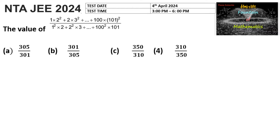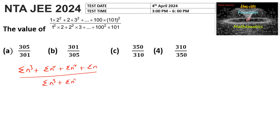Further simplifying, we get summation n³ + 2·summation n² + summation n divided by summation n³ + summation n².